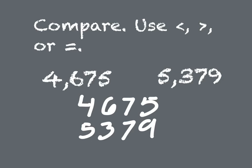So we're going to say 4,675, and right under that I'm going to write 5,379. And what you want to do when you're comparing is start right over in the largest place. So in this case we'll start in the thousands place and we'll see which one of these numbers is bigger.